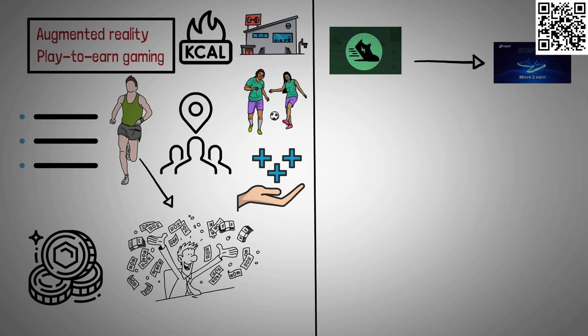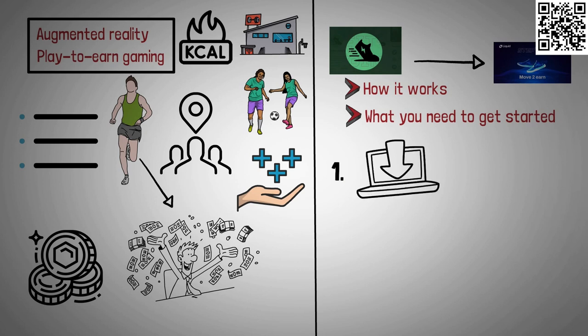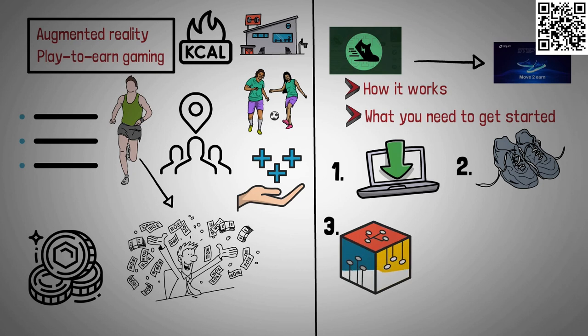Putting all these aside, let us look at how it works and what you need to get started. You simply have to, one, download Stepin app, two, buy a pair of virtual sneakers, which is an in-game NFT, three, that's it. Every time you go out, Stepin's motion sensor and GPS technology will monitor how far you have traveled and reward you with tokens.